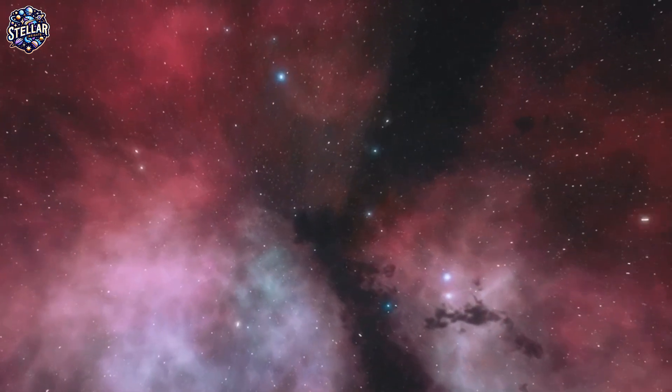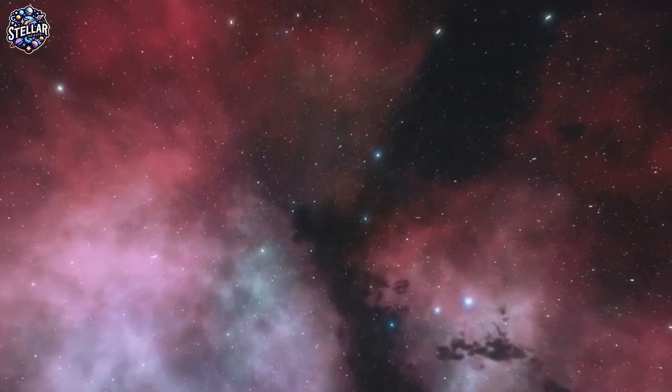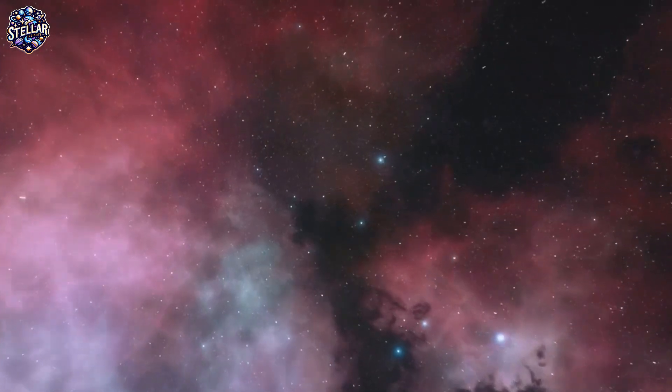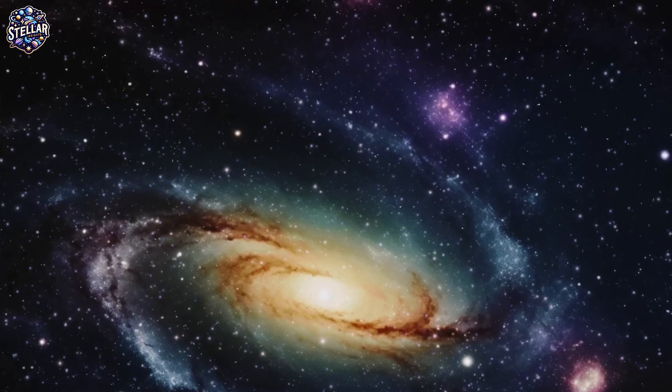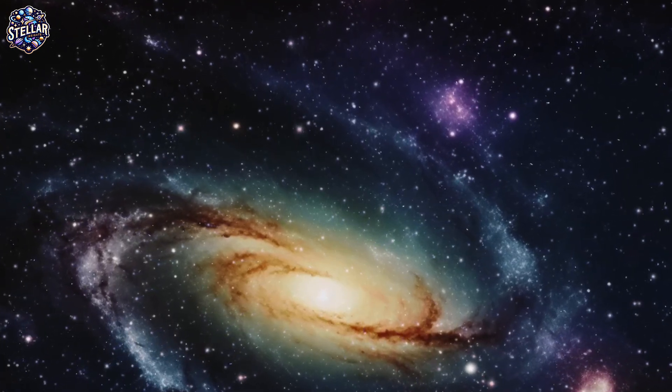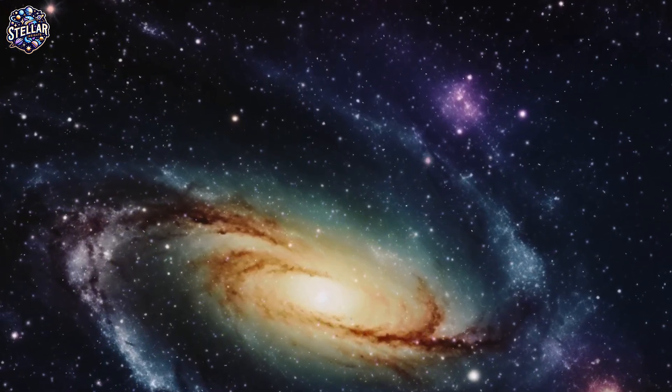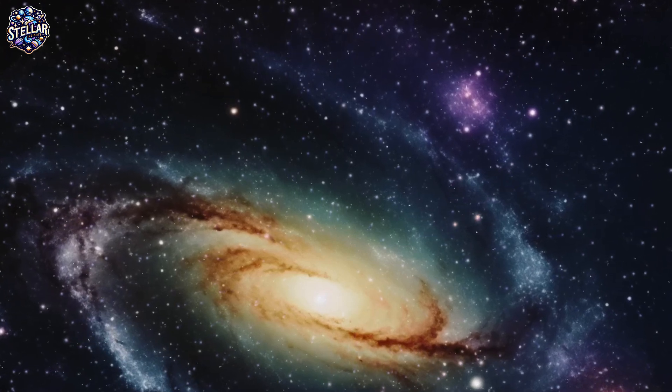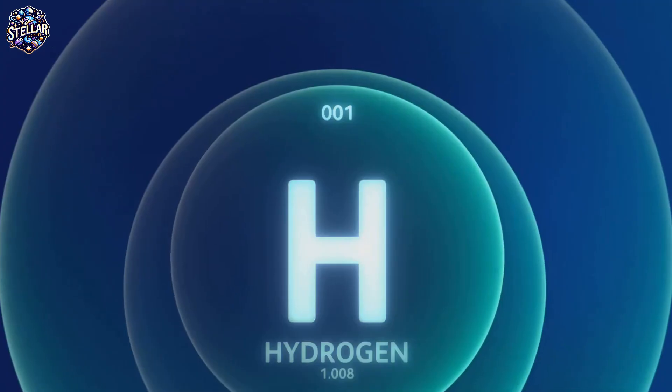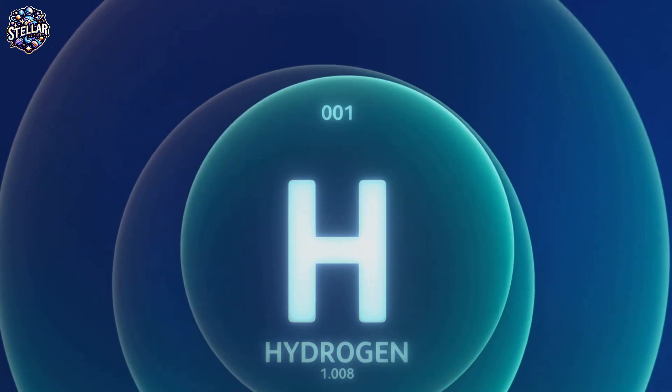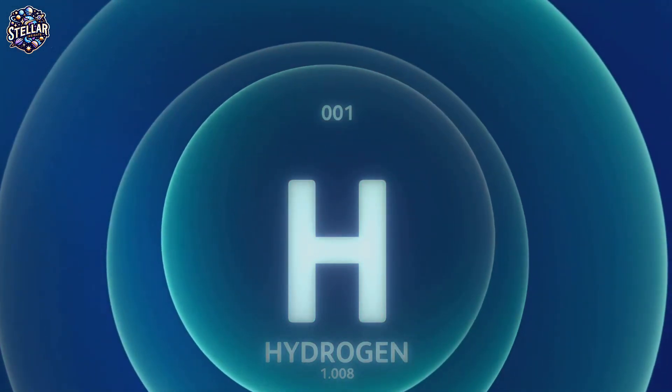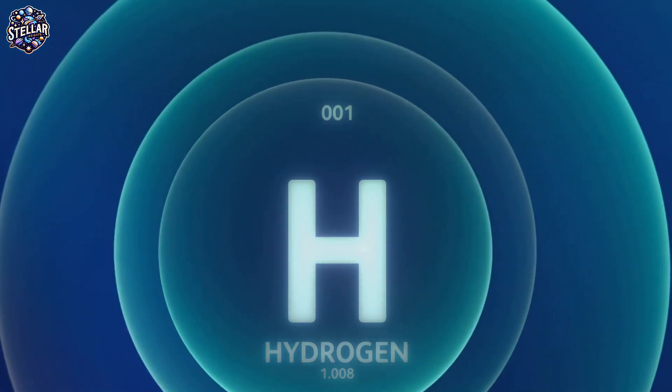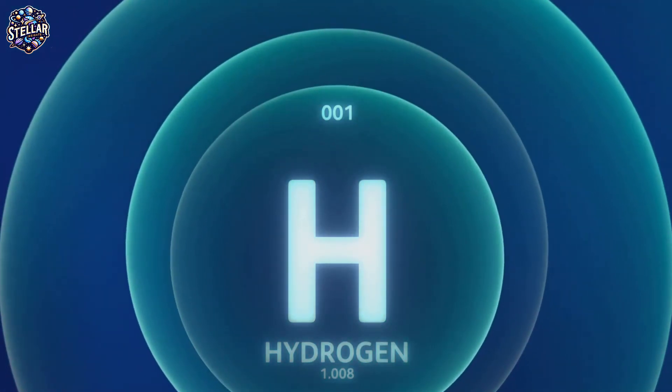But what exactly is this signal? This cosmic whisper from Andromeda is like nothing we've encountered before. It's a symphony of numbers and patterns, a celestial composition of data that we're just beginning to understand. The frequency of the signal is particularly intriguing. It's precisely at 1420 MHz, the famous hydrogen line.